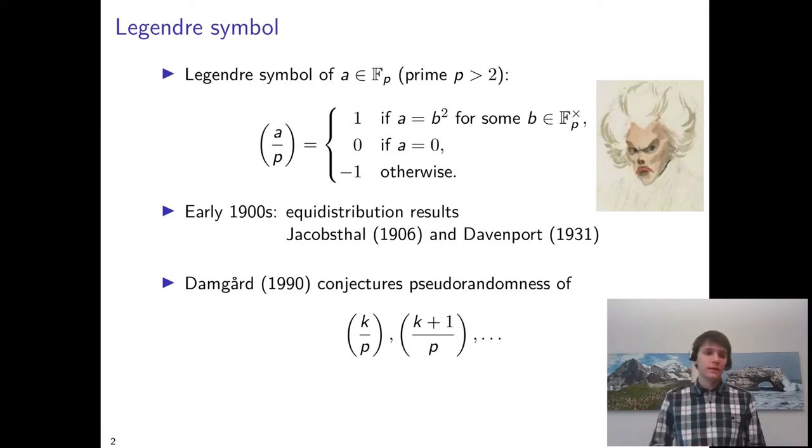At Crypto 1990, Damgård proposed to use the sequence of Legendre symbols of a key k, k plus 1, and so on, as a pseudorandom generator.